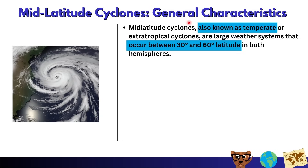First, we are looking at the general characteristics of mid-latitude cyclones. Mid-latitude cyclones, also known as temperate or extra-tropical cyclones, are large weather systems that occur between 30 degrees and 60 degrees latitude in both hemispheres. Remember, if an exam question says temperate cyclones instead of mid-latitude cyclones, it is the exact same thing.